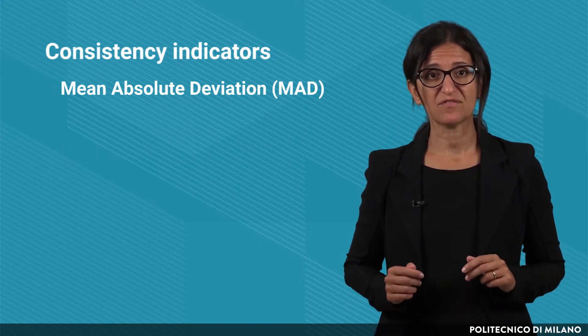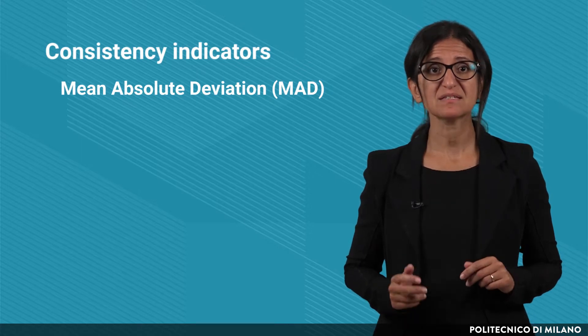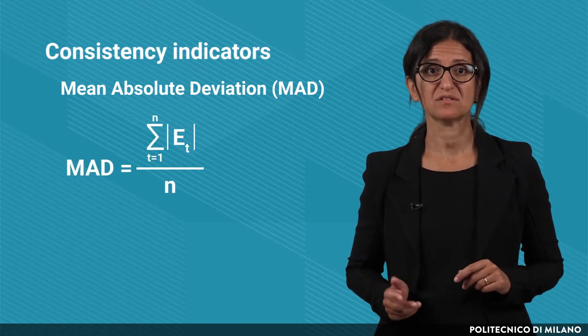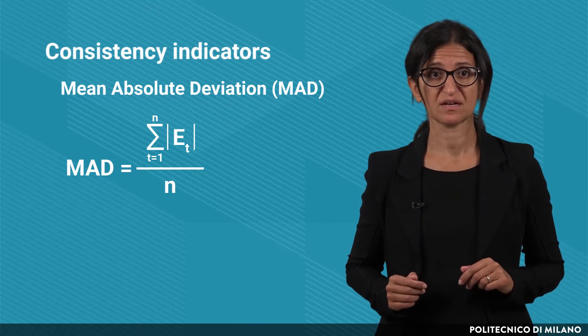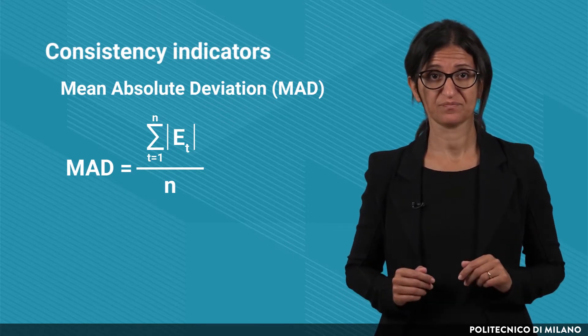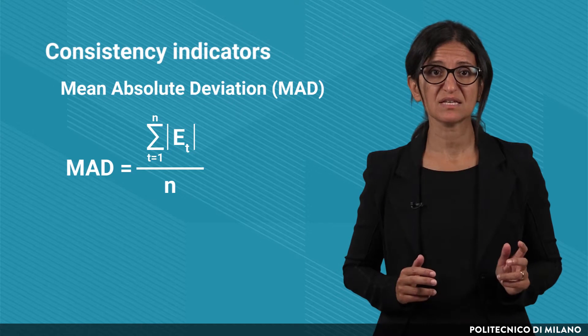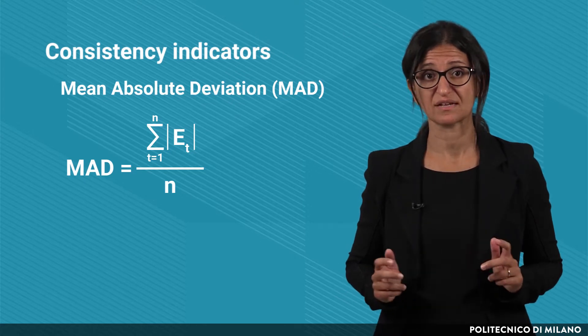The mean absolute deviation is similar to the mean error, but it considers the absolute value of the errors and evaluates the average. This means that positive and negative errors do not cancel out.